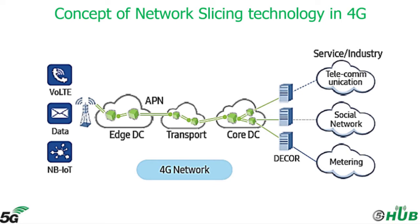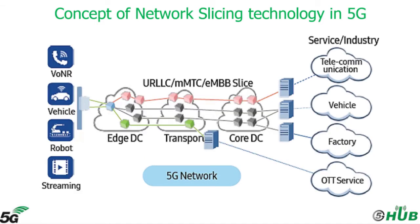Looking back at 4G, network slicing in 4G has been provided in a limited form of isolating a service within a common infrastructure, like access point network, routing multi-operator core network or MOCN, and dedicated core network or DECOR.